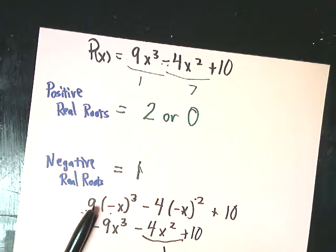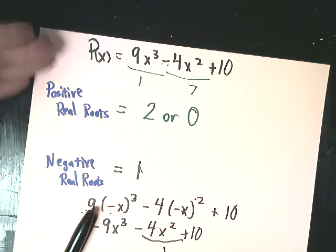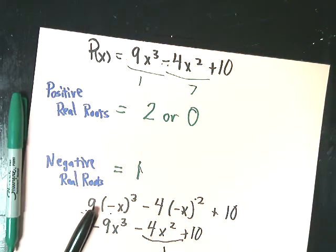Descartes' rule is helpful in the sense that if you're starting from nothing, you can get somewhere. Sometimes it's really annoying and doesn't help you much. But it's not an impossible concept — it's just a lot of math jargon for something that doesn't come up very often. If you need to know how many positive and negative real roots you have, at least you have somewhere to go with it.